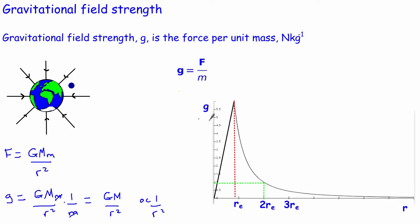If you plot a graph of the gravitational field strength against the distance, it has this characteristic curve. If we double the distance from the surface — so instead of being at the radius of the Earth, we're now twice as far from the centre — then the gravitational field strength goes down by a factor of 4. Because we've doubled R, but since it's R squared, doubling gives 2 squared, so the gravitational field strength goes down by a factor of 4.